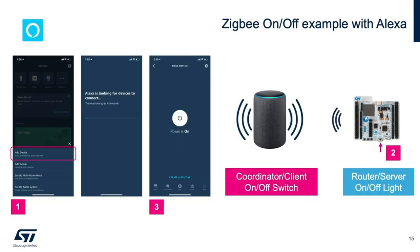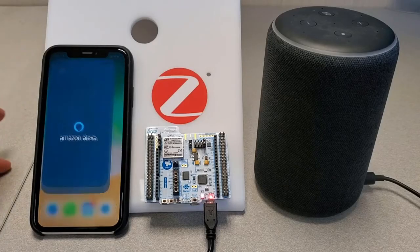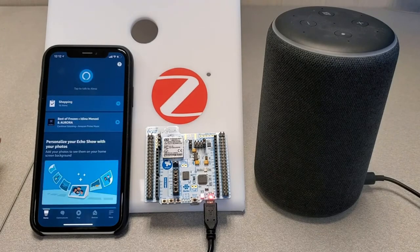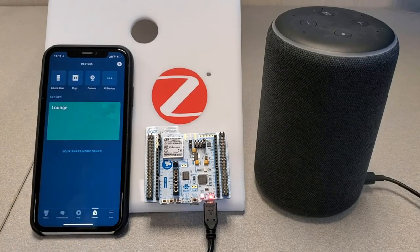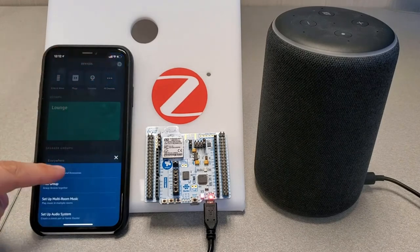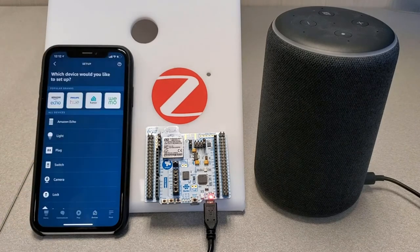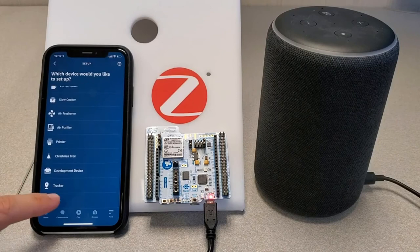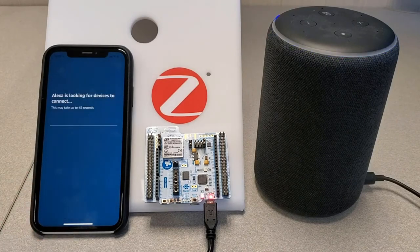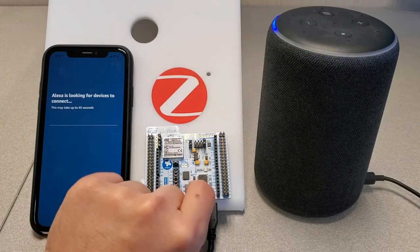Now that we have the WB Nucleo board running the on-off Zigbee application and within range of the Echo Plus, we can now command the Echo to look for new devices and connect. We can do this from the Alexa app installed on the mobile phone. Make sure to restart the server by resetting the WB Nucleo board after the Echo has started to perform the device discovery.